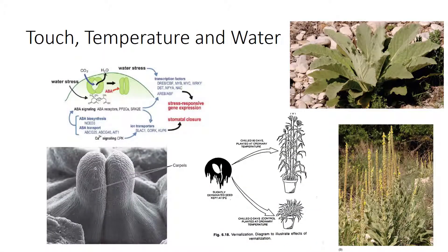Plant parts frequently grow against objects and respond to this contact. They can use objects for support, such as vine tendrils, or change directions to avoid them. Developmental structures may crowd into each other, fuse, and form a single structure, such as these carpels.